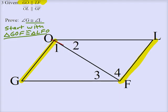Those yellow lines are parallel, and they are cut by this transversal OF. So if we've got parallel lines here, cut by a transversal, we're thinking about angles. And in particular, the only angles that touch those yellow lines are angles 1 and 4. So GO parallel to LF, that gives us angle 1 congruent to angle 4.